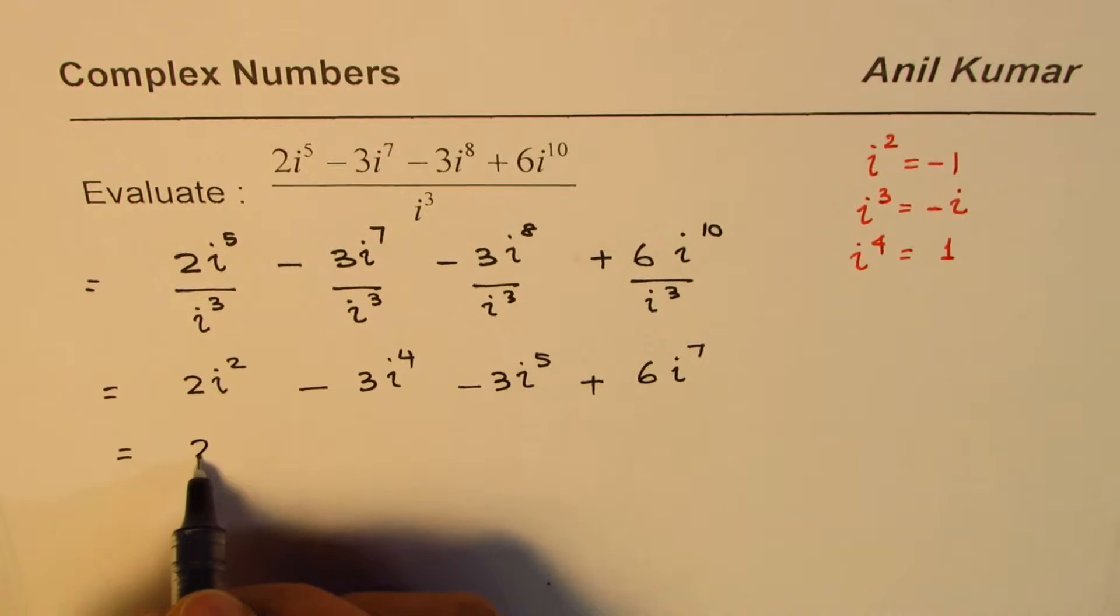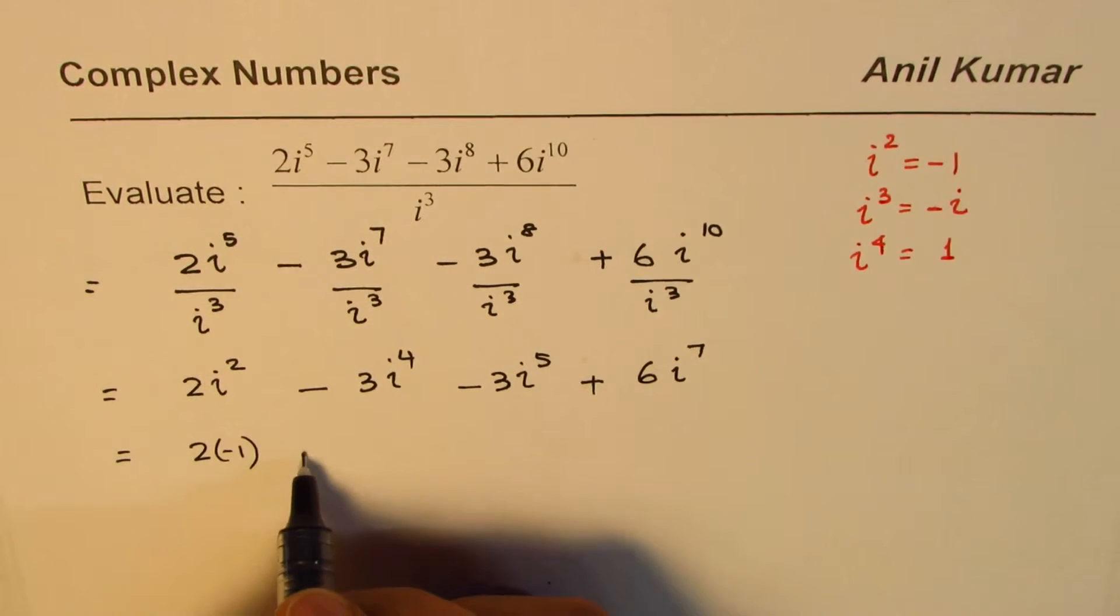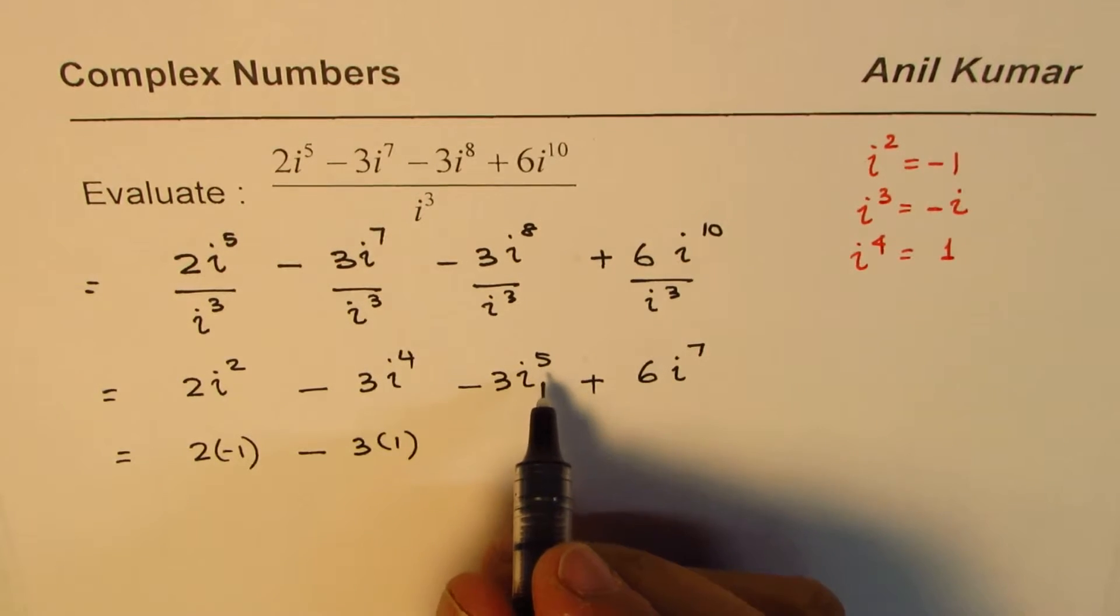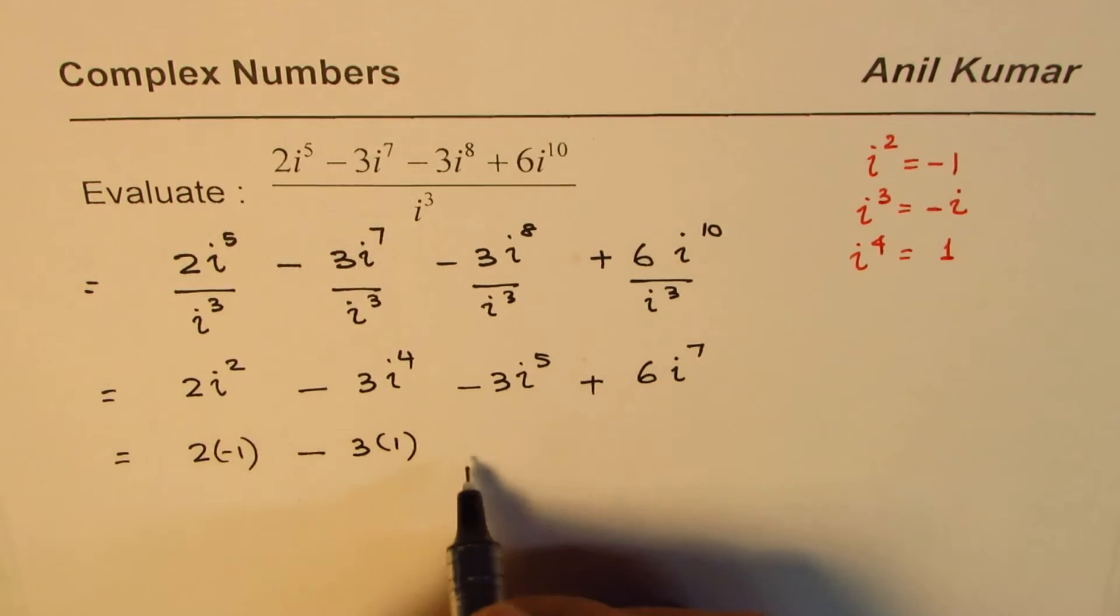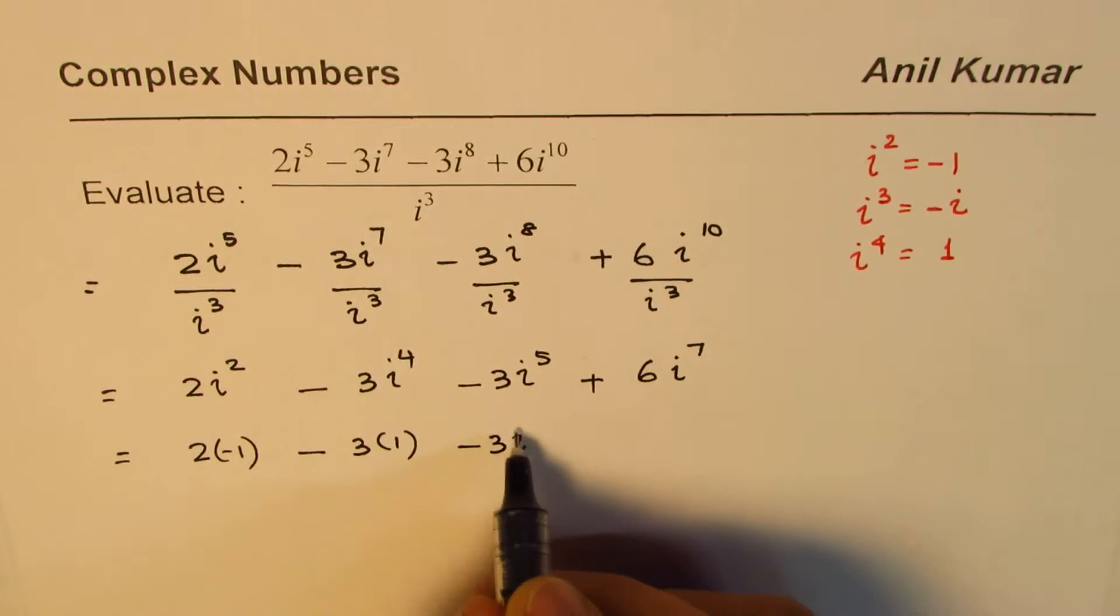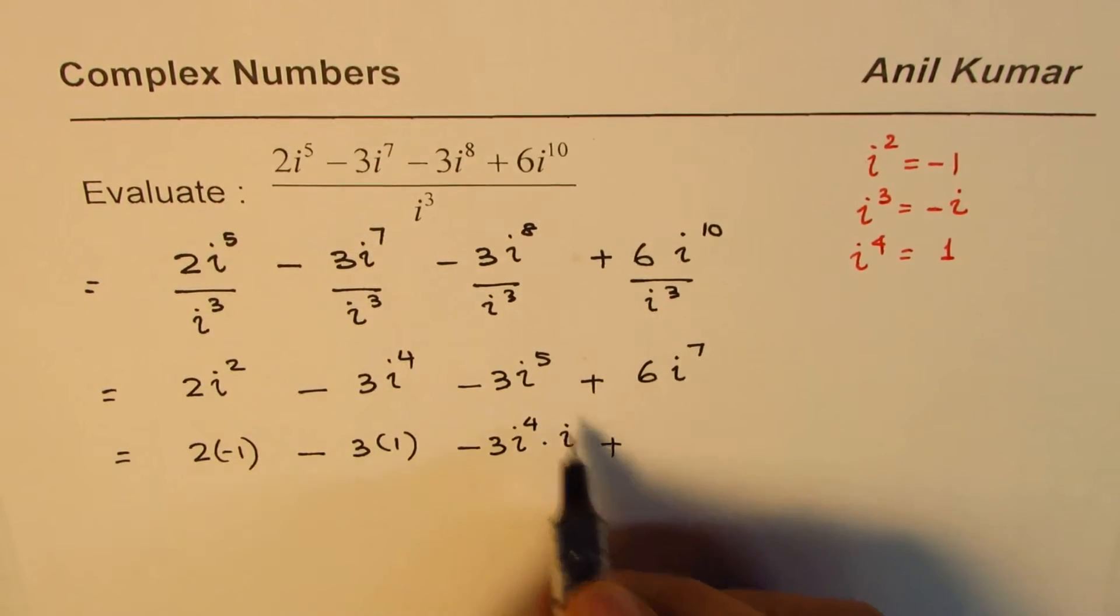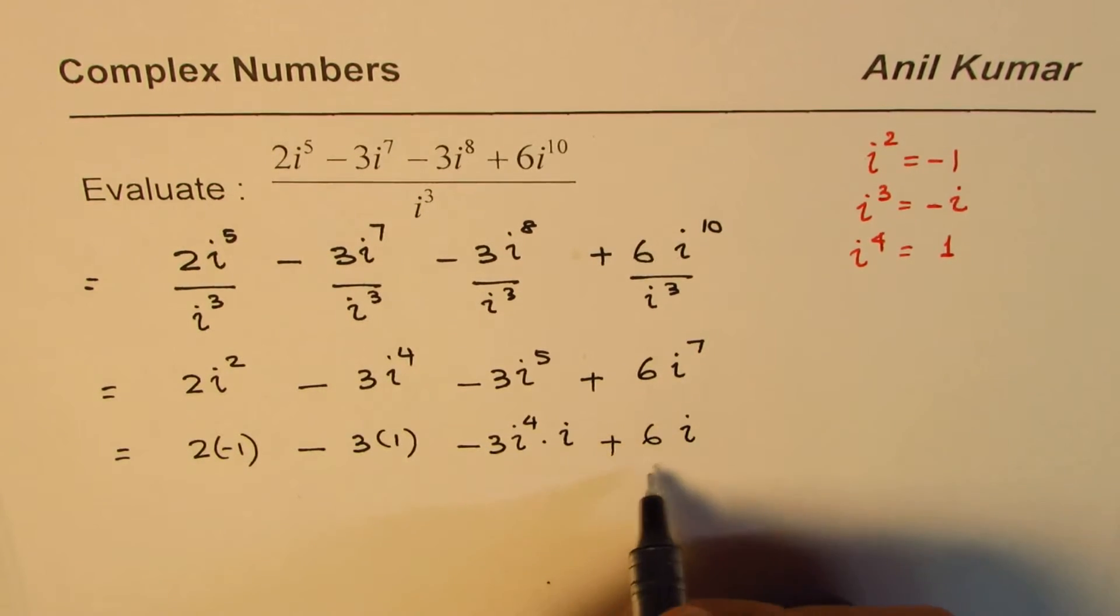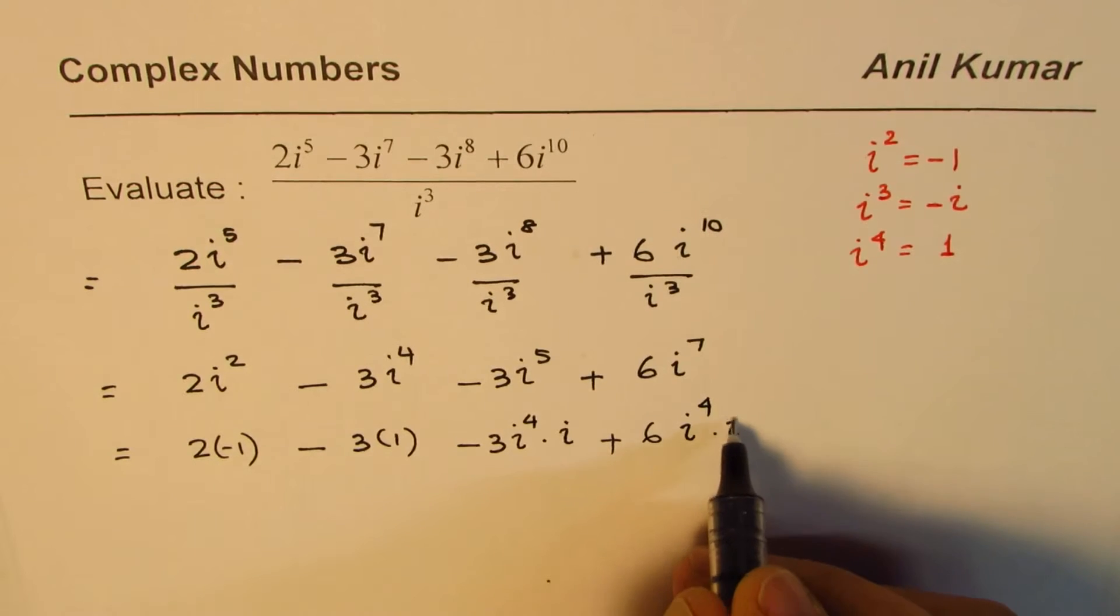So, i^2 is -1. We could write this as 2 times -1. This is 3 times 1. i^4 is 1, it could be written as -3 times i^4 times i. 6i^7 is i^4 times i^3.